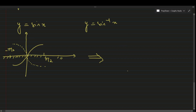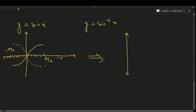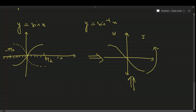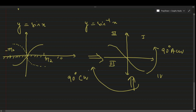After reflecting about the x-axis, the next step is to rotate the result anticlockwise by 90°. Instead of rotating the graph, you can equivalently rotate yourself clockwise by 90° — tilt your head or your phone. When you do this, the quadrants remap: the fourth quadrant becomes the first, the first becomes the second, the second becomes the third, and the third becomes the fourth.